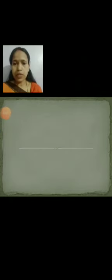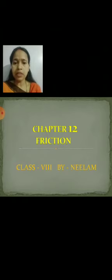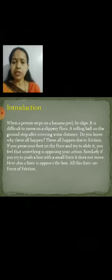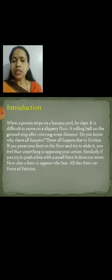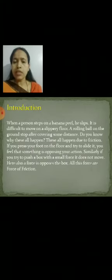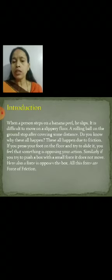Hello students, today I am going to start a new chapter — Chapter 12: Friction, for Class 8. First of all, I will introduce what is friction. When a person steps on a banana peel, he slips. Even it is difficult to move on a slippery floor. A rolling ball is stopped after covering some distance.